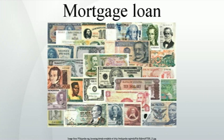The most common way to repay a secured mortgage loan is to make regular payments of the capital and interest over a set term. This is commonly referred to as self-amortization in the U.S. and as a repayment mortgage in the U.K. A mortgage is a form of annuity from the perspective of the lender, and the calculation of the periodic payments is based on the time value of money formulas. Certain details may be specific to different locations — interest may be calculated on the basis of a 360-day year, for example.